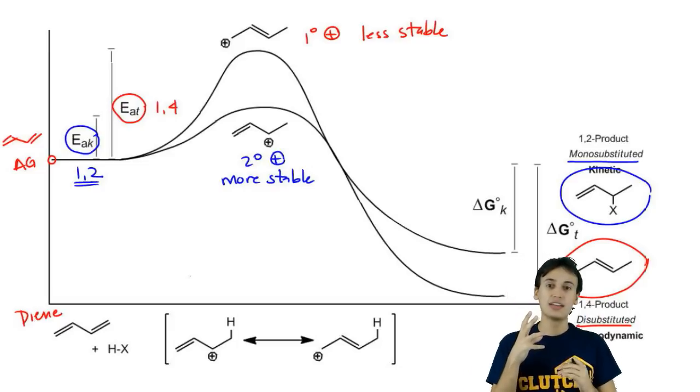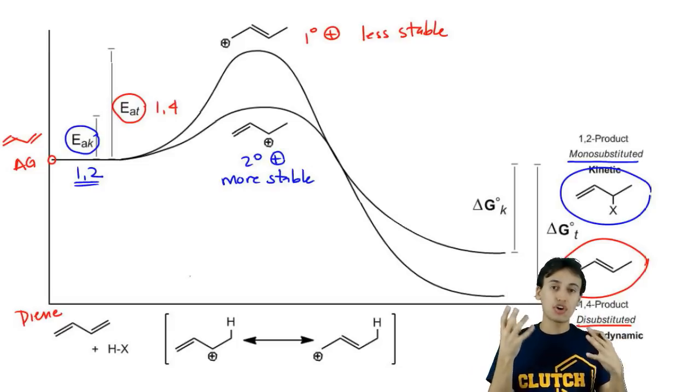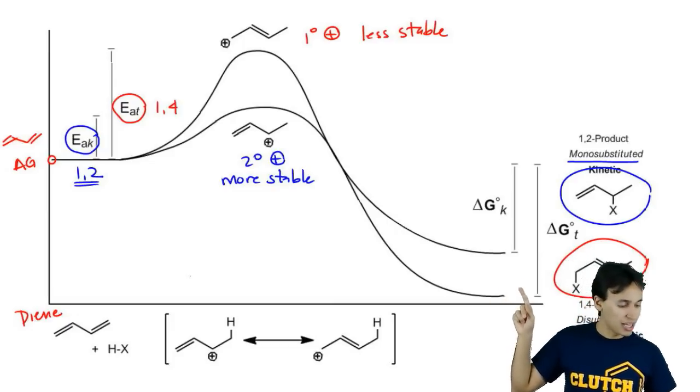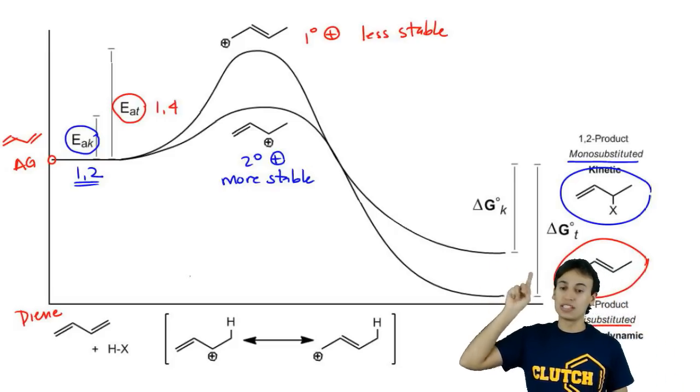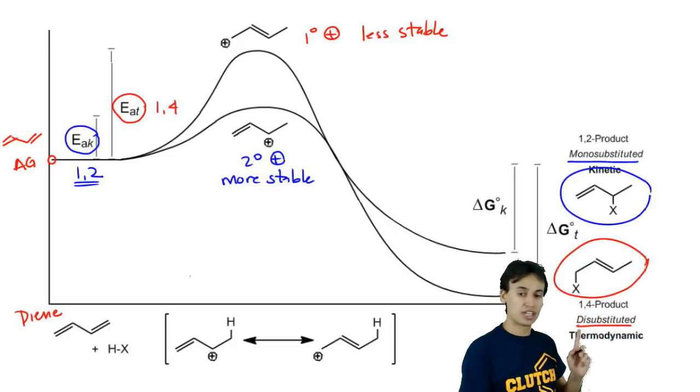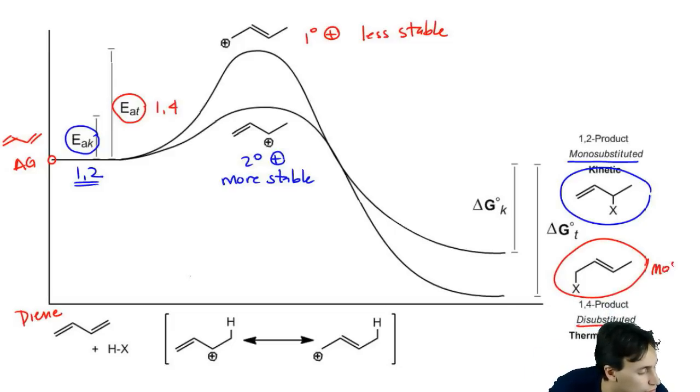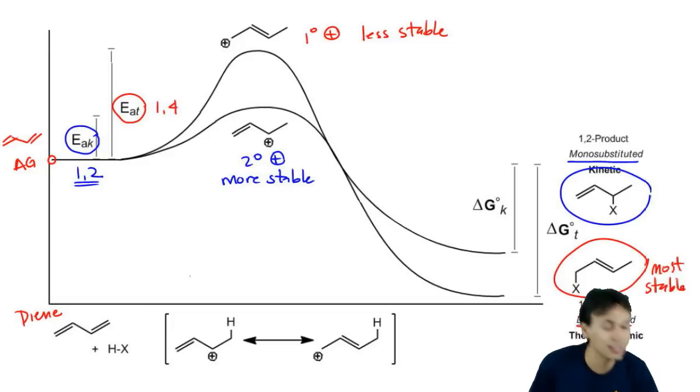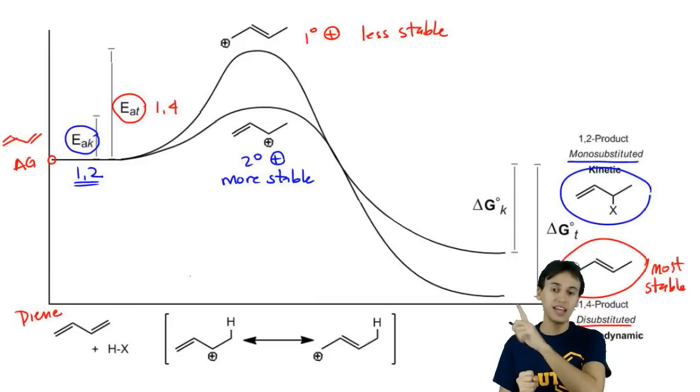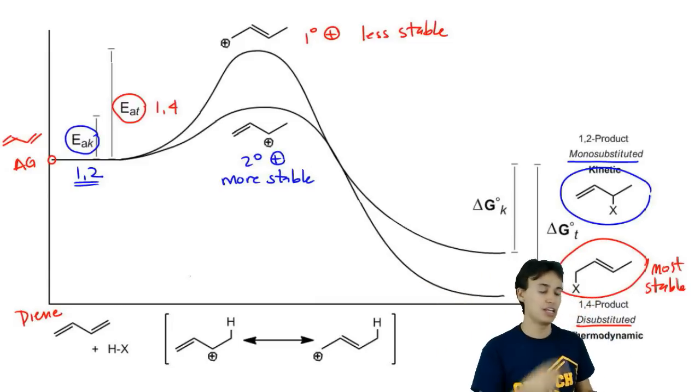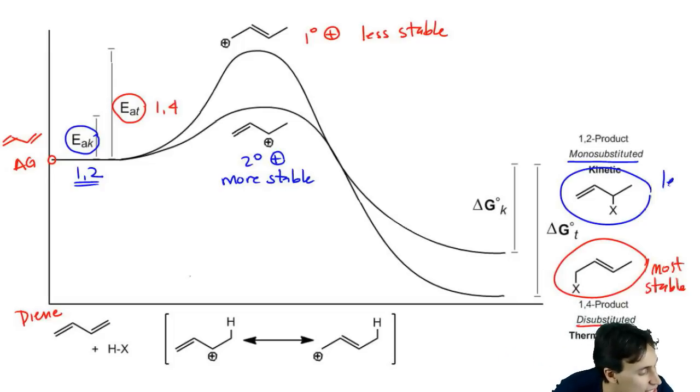Notice that these things are in conflict with each other because my thermodynamic intermediate was the least stable but the thermodynamic product is the most stable. It's exactly the opposite for my kinetic product. My kinetic intermediate was most stable but my kinetic product was least stable.